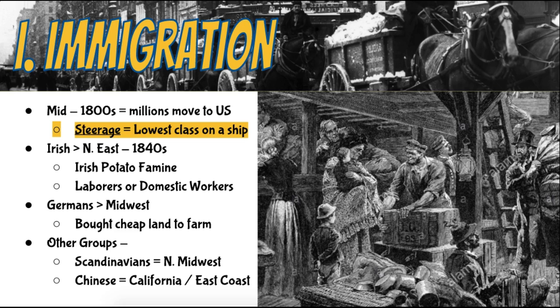Driven out by an 1848 revolution in their homeland and general poverty, Germans made up another significant percentage of US immigrants in the mid-19th century. Germans tended to settle in the midwest, where they found inexpensive land and the opportunity to farm — places like Indiana, Ohio, and Pennsylvania, for instance.